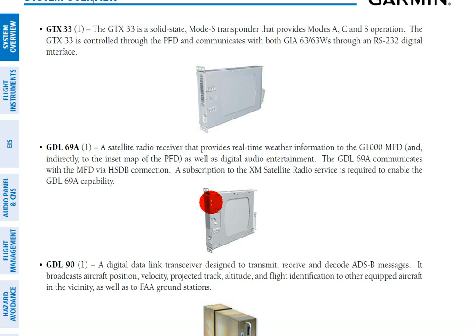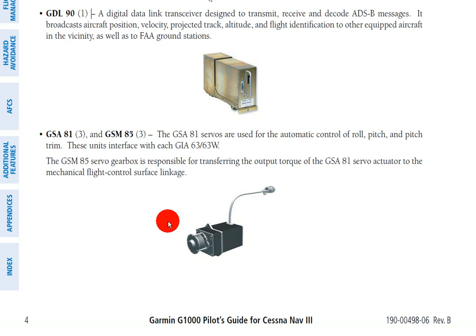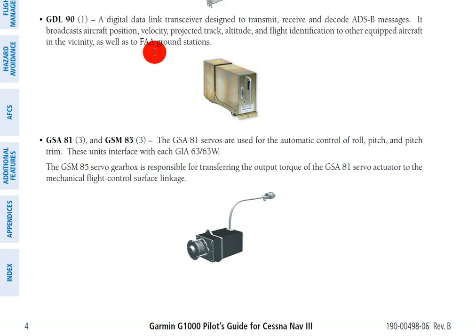Below that is the GDL 90, which is an ADS-B receiver. ADS-B is the new type of system coming into play for the FAA's next-gen system. It gives you information like the aircraft's position, velocity, track, and altitude, and allows aircraft to receive information from other aircraft — essentially giving you a radar scope showing all the information of surrounding airplanes, just like a controller would see, increasing situational awareness in the cockpit.